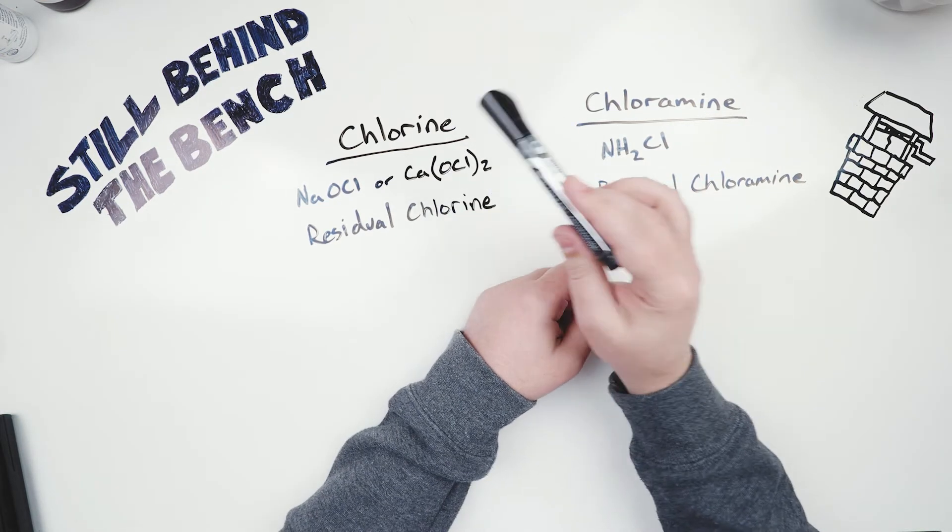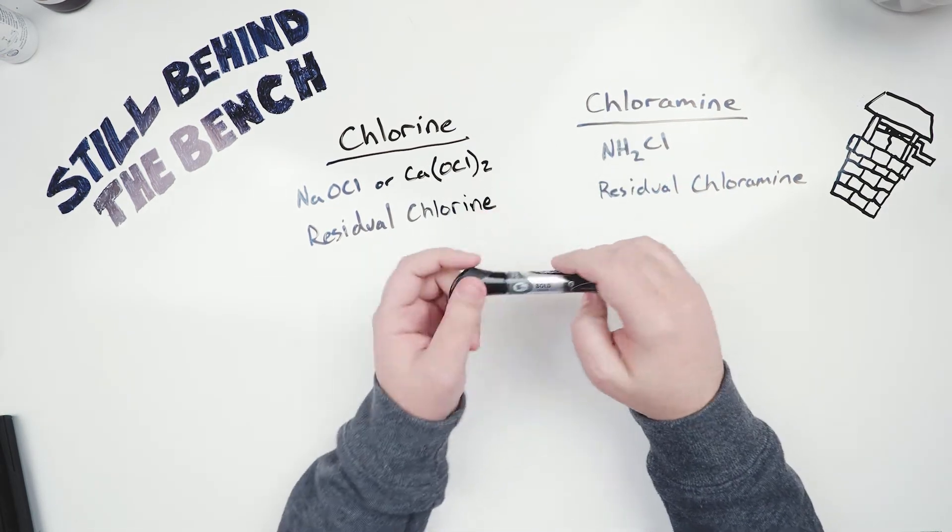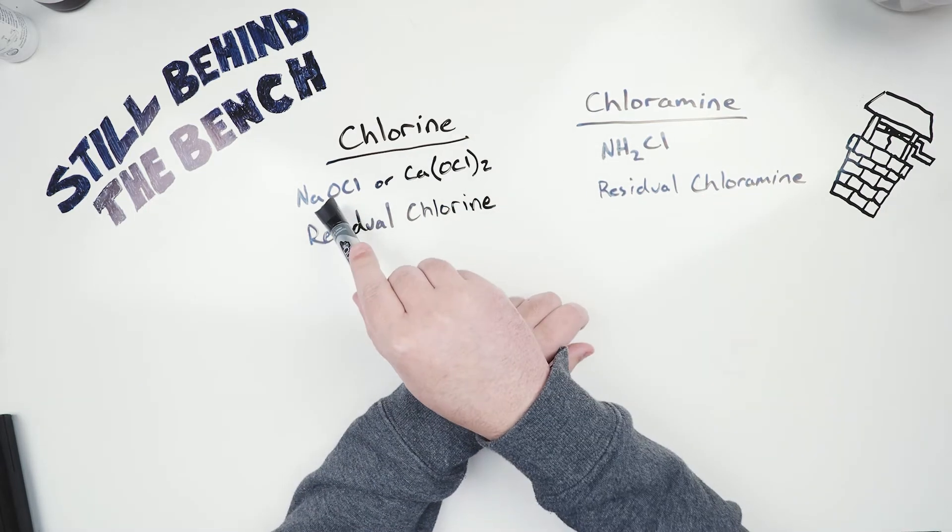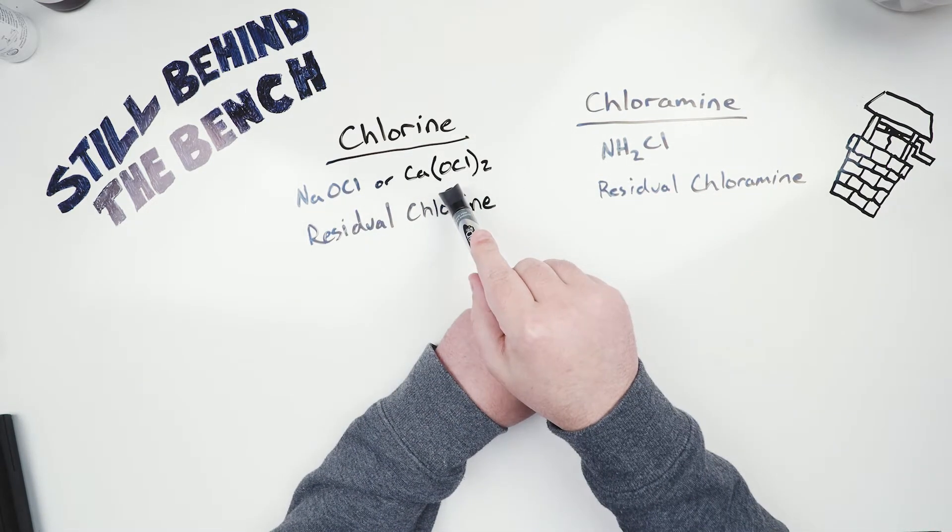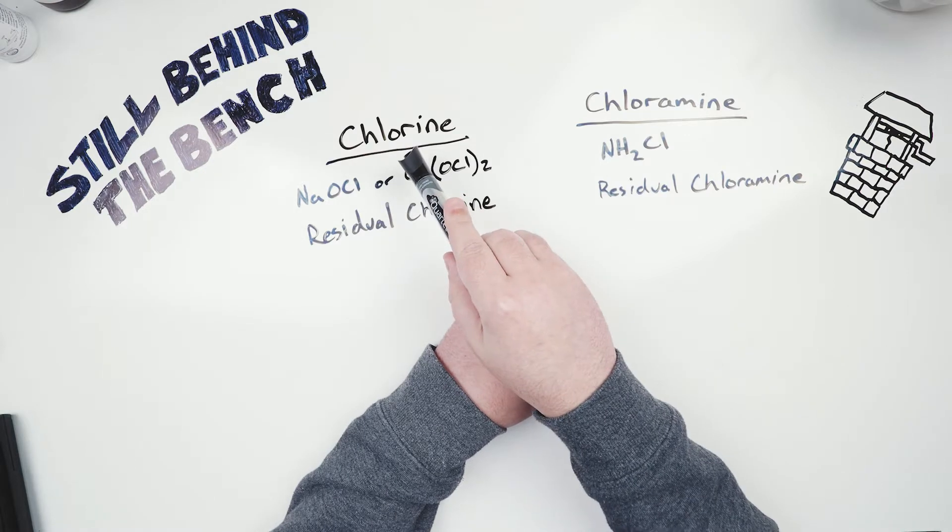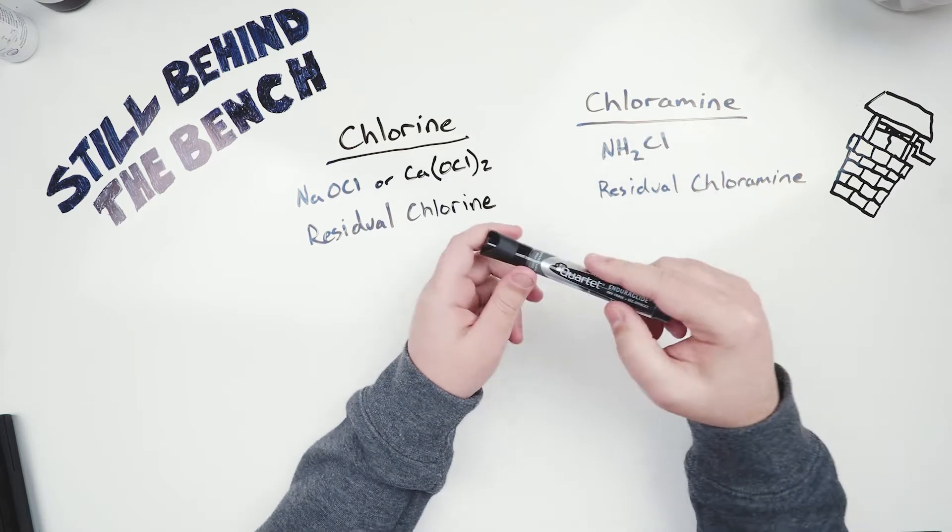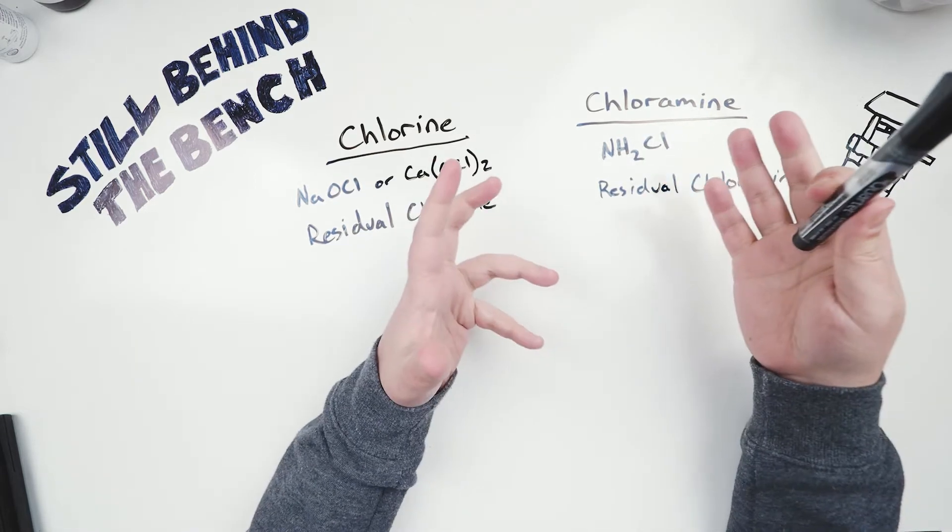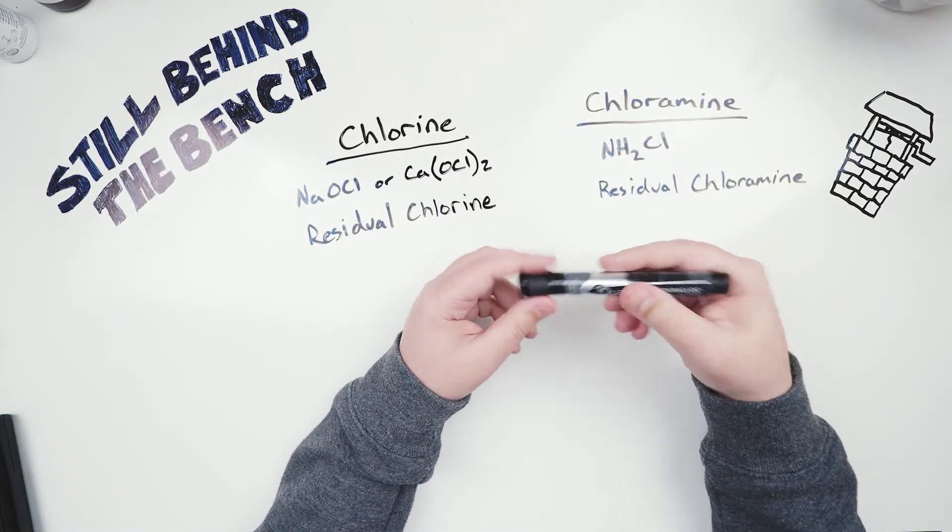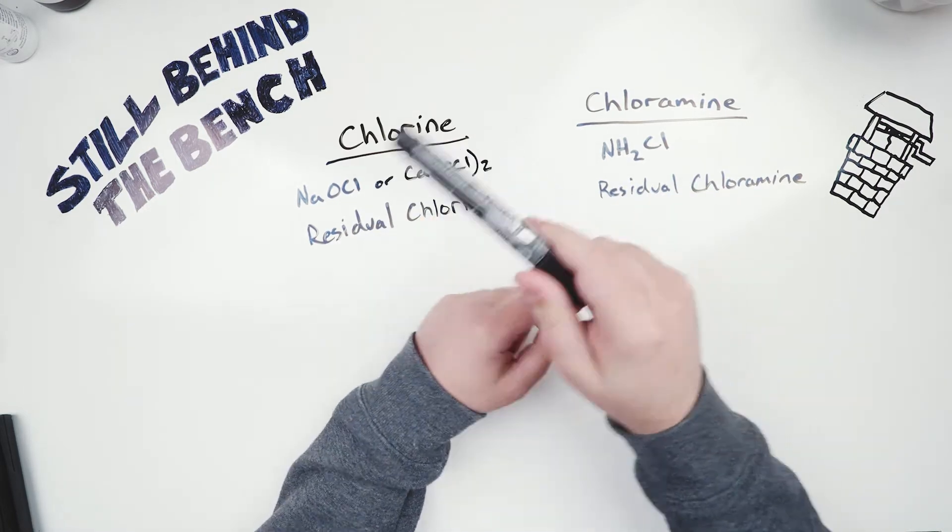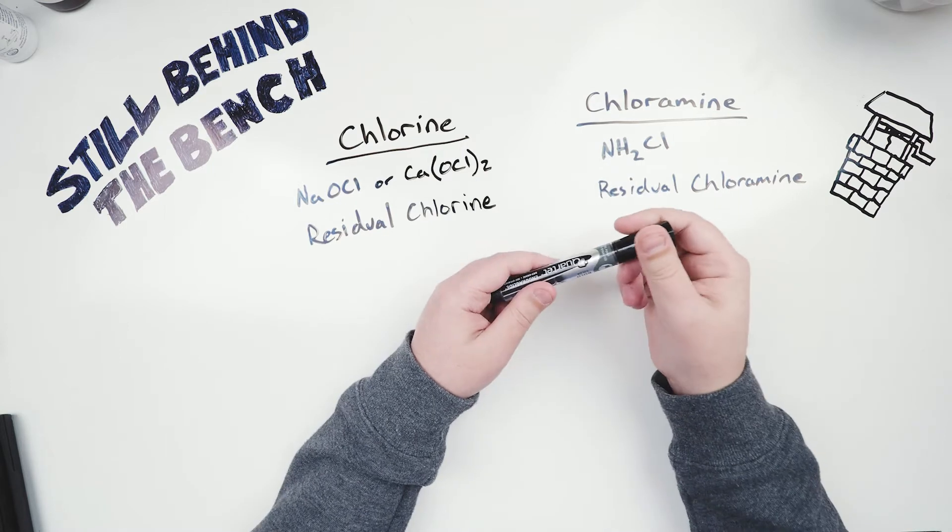Okay so chlorine and chloramine, two types of compounds commonly used in treating tap water specifically as sodium hypochlorite or calcium hypochlorite when it comes to chlorine or monochloramine when it comes to chloramine. You know if you're on a well you probably don't have to deal with it unless you add it yourself which I have seen done but for the rest of us we may end up with issues when it comes to one of these two compounds.